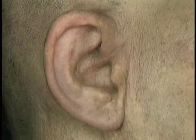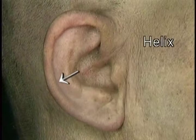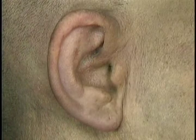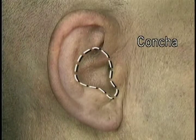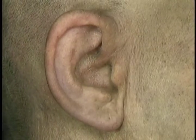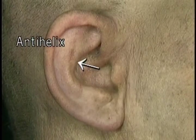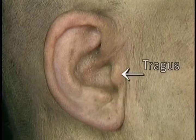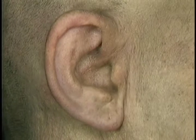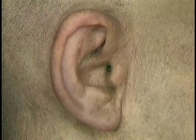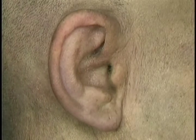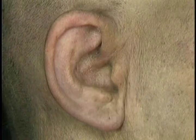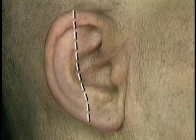We look at the auricle first. The folded outer rim of the auricle is the helix. The helix spirals down into the floor of the central concavity, the concha. The rim of the concha is defined by this curved ridge, the anti-helix. Two projections, the tragus and the anti-tragus, partly hide the entrance to the external auditory meatus. The shape of the upper three quarters of the auricle is determined by the cartilage that forms its framework.